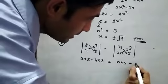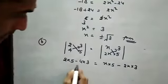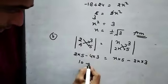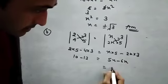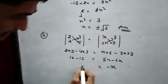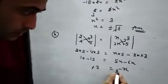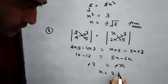2 times 5 minus 2 times 3 equals student. 10 minus 12 equals 5x minus 6x. Here is minus x and this side minus 2. Minus minus cancel, x equals 2.